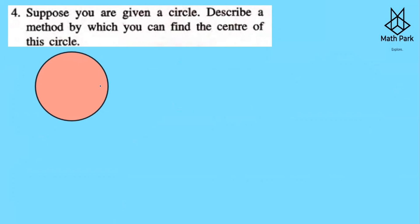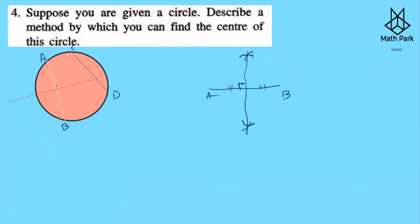Question 4: Given a circle, describe a method to find its center. Draw two chords, say AB and CD. Draw the perpendicular bisector of AB — take more than half the segment, draw arcs from both endpoints with the same radius, join the intersections. Draw the perpendicular bisector of CD similarly. Where the two perpendicular bisectors meet is the center of the circle.